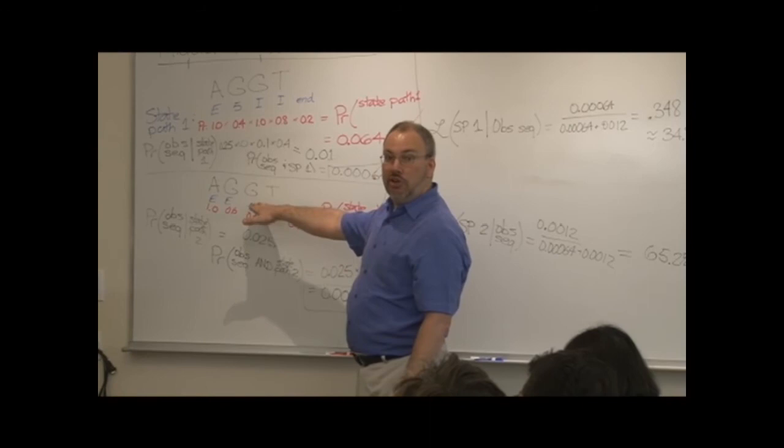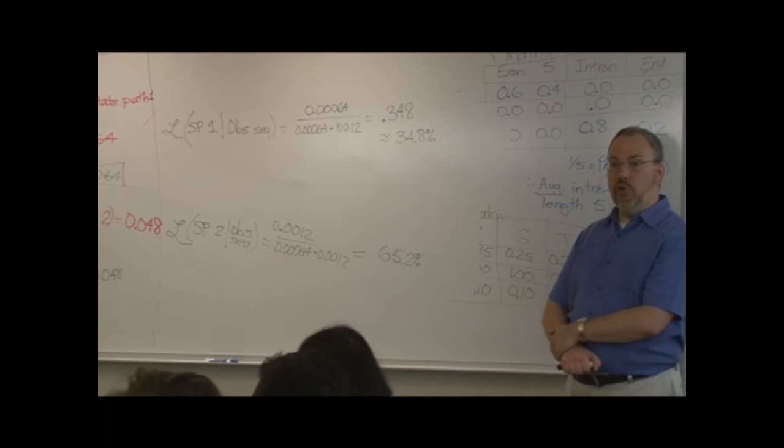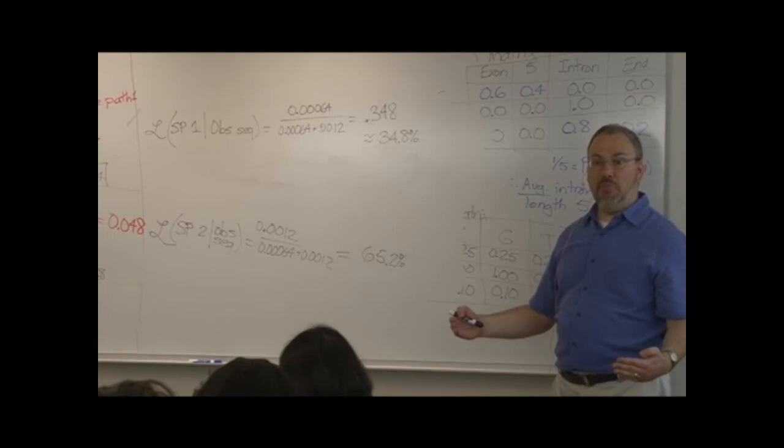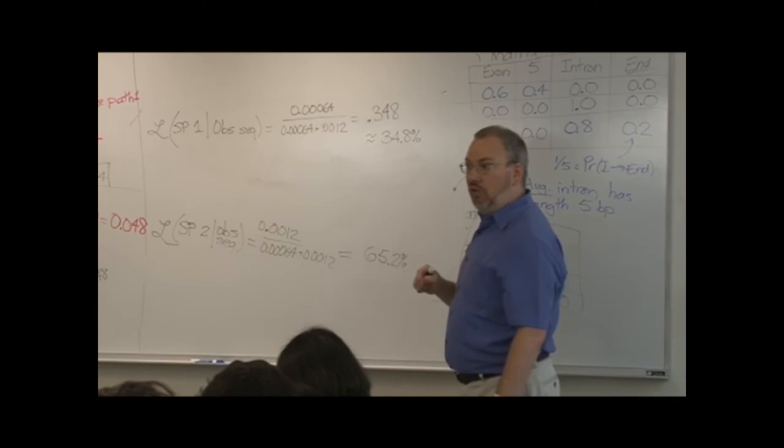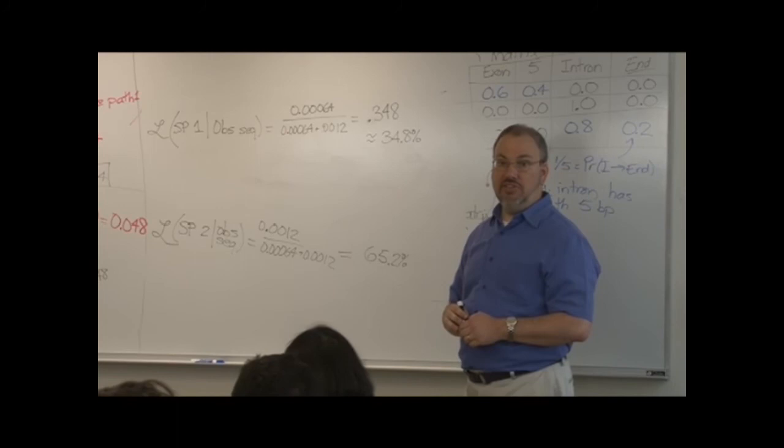We can favor one state path over the other. Theoretically, if we got more data, maybe by using something, a sequence of more than four nucleotides, perhaps you could resolve it more accurately, but in many cases what you're going to report is not a single state path, but a cluster of state paths that combined represent the likely outcomes where you can say, okay, the splice site is probably at one of these positions. We don't know for sure, but all the others are pretty low probability events. Yes?